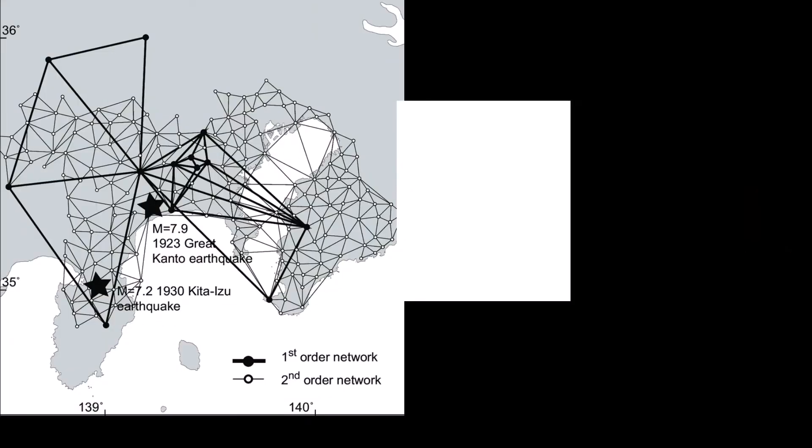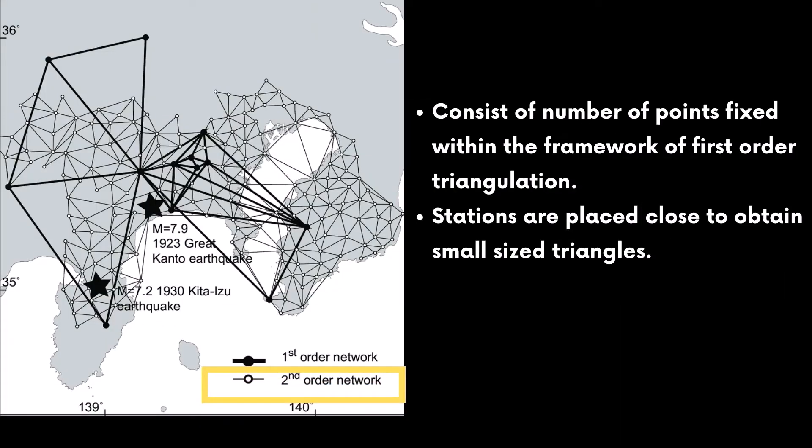Secondary triangulation or second order triangulation in surveying. It consists of number of points fixed within the framework of first order triangulation. The points are immediate control for the detailed engineering and other surveys. Stations are placed close to obtain small size triangles.